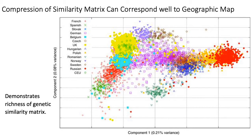The key point is that PCA didn't know about country of origin — it only received the genetic similarity matrix as input — yet PC1 and PC2 group individuals from the same country together. By using PC1 and PC2 as variables in your linear model, you're essentially correcting for country of origin even without knowing it ahead of time. As a bonus, the positions of individuals from different countries loosely correspond to their actual geographic map positions, though this doesn't always happen.